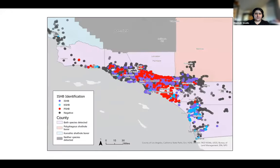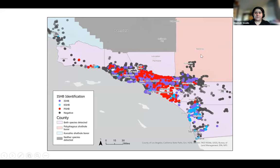Looking closer at each county — each county has a filled-in color based on which species of invasive shothole borer have been found there. So far San Luis Obispo has KSHB. San Bernardino County has the Polyphagous shothole borer from what has been sequenced. Santa Barbara, Ventura, Los Angeles, Orange, Riverside, and San Diego counties have both species of the invasive shothole borer.